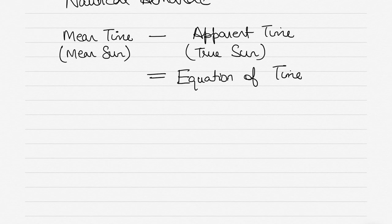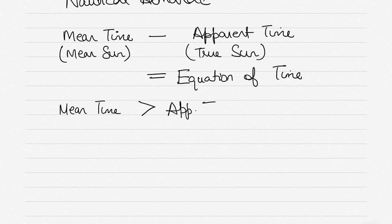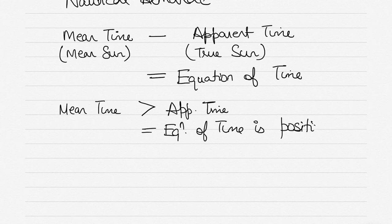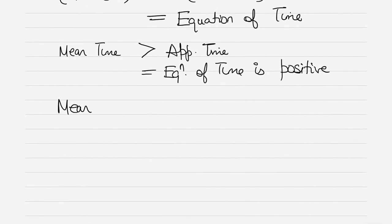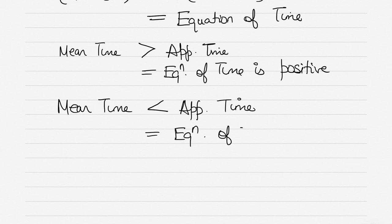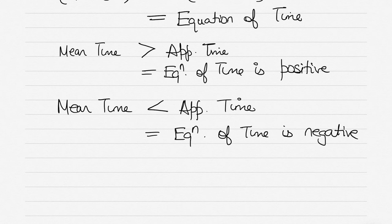Wherever you read about equation of time, you will see it expressed as the difference between mean time and apparent time. If mean time is greater than apparent time, the equation of time is positive. Similarly, if mean time is less than apparent time, the equation of time is negative. It is an interval of time, and we always say 'difference' since either one could be greater.